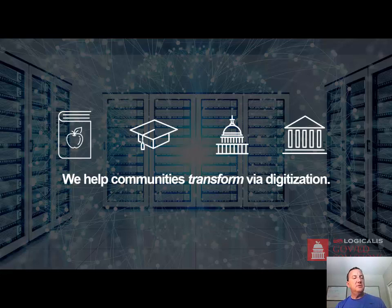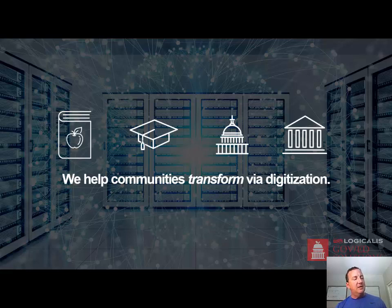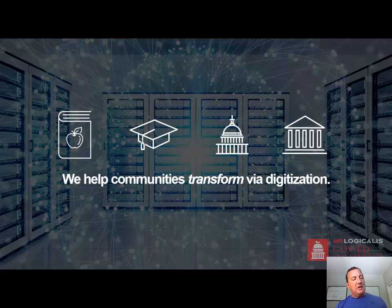Digitization of a process, simply put, is finding a process in an organization that is old-fashioned or done in an analog way — sometimes involving paper, sometimes technology whose data isn't actually used — and creating a fully digitized way of doing it. A classic example in higher ed: a student uses Google Apps on a laptop to write a paper, but the professor wants it printed, so it suddenly becomes an analog process again and all the value of digitization goes away.